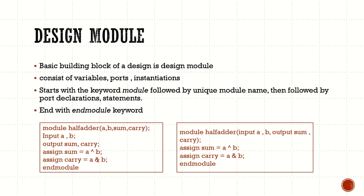There are two ways to declare inputs and outputs. In the first way, you directly give the port names in the module header and later mention them as inputs and outputs separately. In the second way, you directly mention them as inputs and outputs right in the module port list.